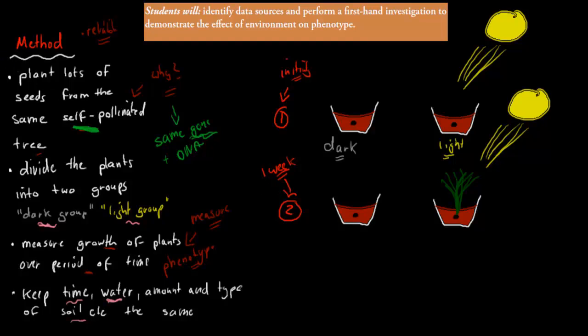You would have looked at all the different plants. Your results might be that in the dark group there was no growth at all. Whereas for the light group, there was enough growth to be considered to have grown properly. Here we have a plant that had grown.